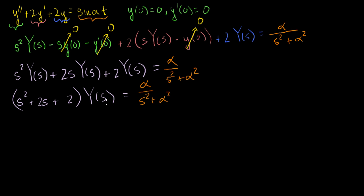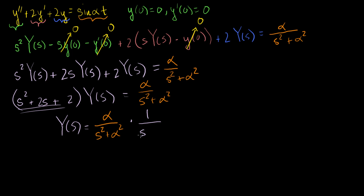Factoring out Y(s), we get (s² + 2s + 2)·Y(s) = alpha over s² plus alpha². Dividing both sides, Y(s) equals alpha over (s² + alpha²) times 1 over (s² + 2s + 2).